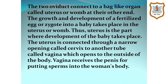The two oviducts connect to a bag-like organ called uterus or womb at their other end. The growth and development of a fertilized egg or zygote into a baby takes place in the uterus or womb. Thus, uterus is the part where development of the baby takes place. The uterus is connected through a narrow opening called cervix to another tube called vagina, which opens to the outside of the body. Vagina receives the penis for putting sperm into the woman's body.